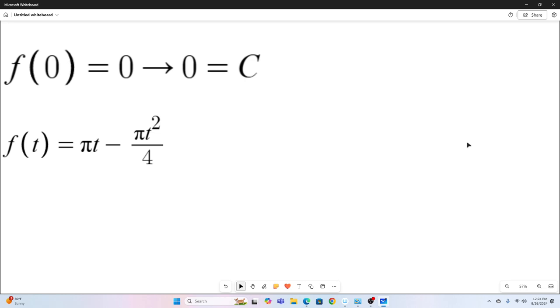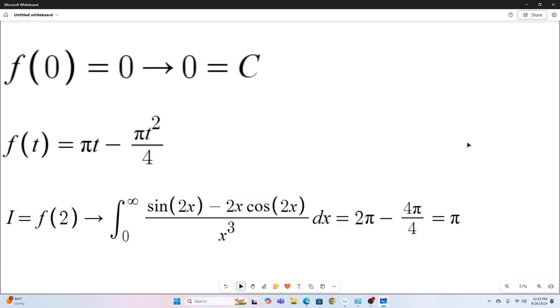And we know that if we plug in two for F of T, we get our original integral. So I, which is our original integral, is F at two, which is this, also our original integral. And that evaluates to two pi minus four pi over four, which is equal to pi.